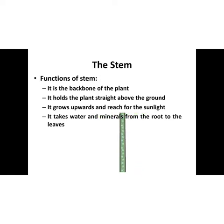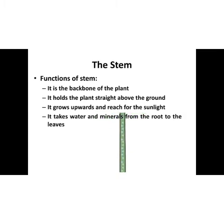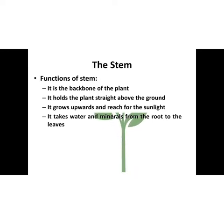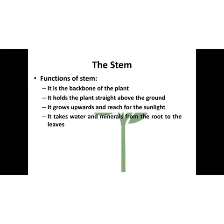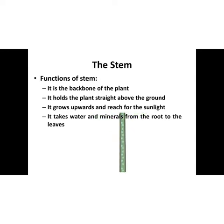The functions of the stem. We can say a stem is the backbone of the plant. That means it holds a plant straight above the ground. The stem grows upward and reaches for sunlight. This sunlight is used by the plants in making food. The stem also takes water and minerals from the root to the leaves.